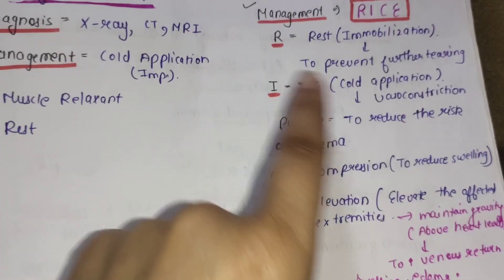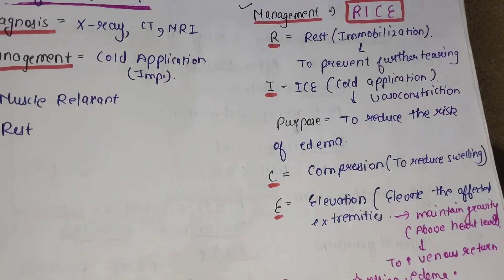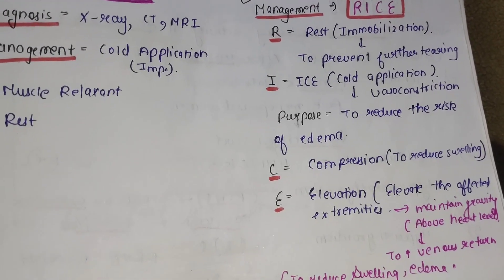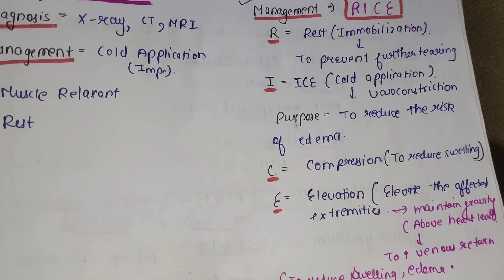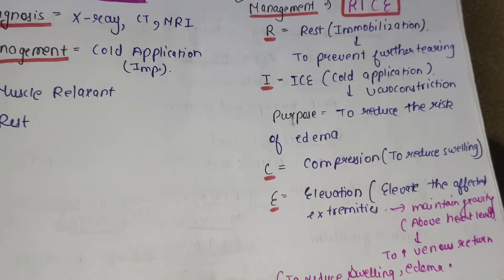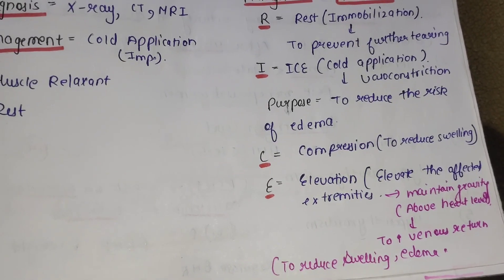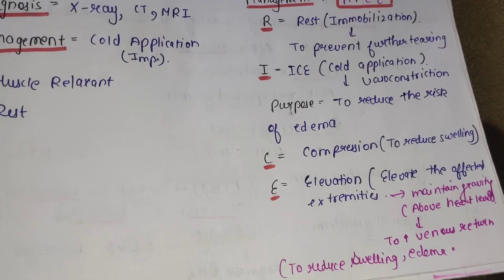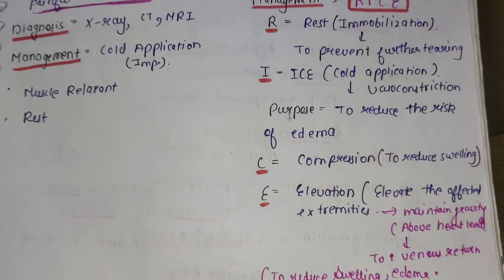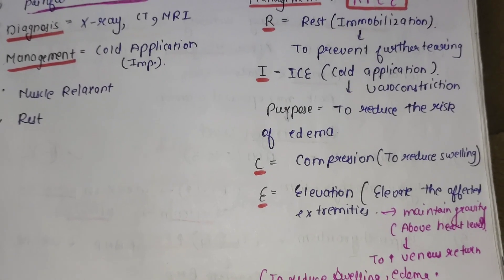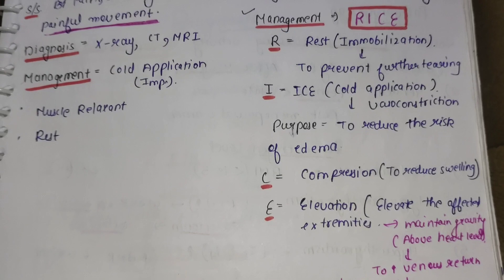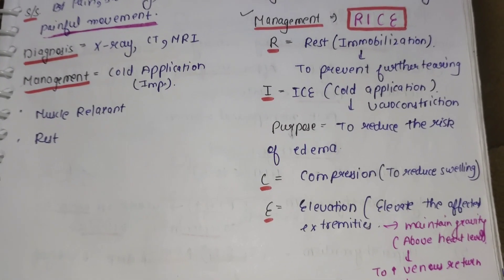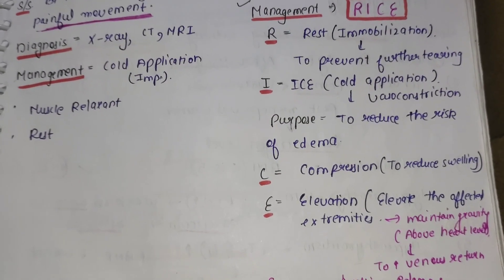Ice का use किया जाता है — cold application provide की जाती है ताकि vessels constrict हो सकें. Cold application से vasoconstriction होता है और इससे edema का risk reduce हो जाएगा. C से Compression — compression provide करना है patient को ताकि swelling reduce हो सके. इसमें जो sprain वाला area होता है उसको elastic bandage की help से wrap किया जाता है ताकि support provide हो और swelling decrease हो सके.